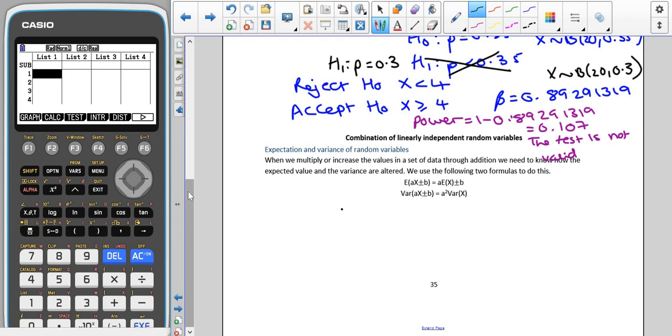We're going to start off by looking at expectation and variance and how these change if we multiply by a scalar or add on a value to either the expectation or the variance.